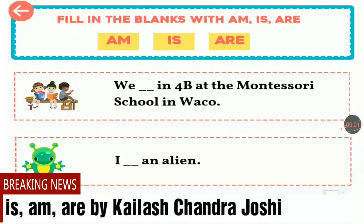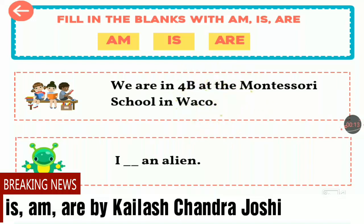Fill in the blanks with 'am,' 'is,' or 'are' — the three auxiliary verbs. We are in 4B in the Montessori school in Vacco. 'Are' is right. I am an alien — 'am' is right.